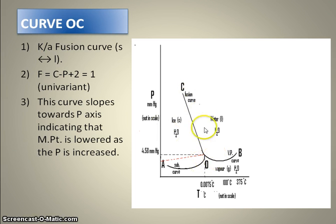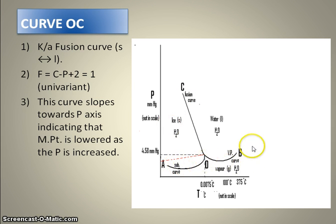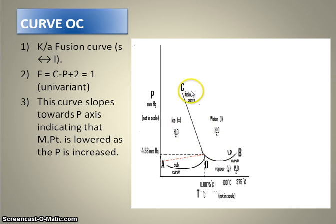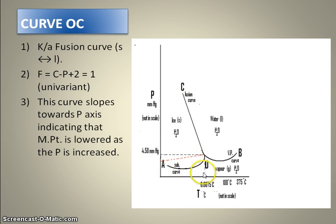Then comes curve OC. Curve OC is known as the fusion curve or the melting point curve. Similar to the previous curves AO and OB, the degree of freedom obtained here is also 1, and the curve is univariant. The most important thing to notice about this curve is that it tilts towards the pressure axis, meaning that on increasing the pressure, the melting point of water decreases.